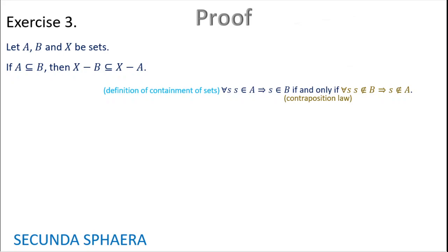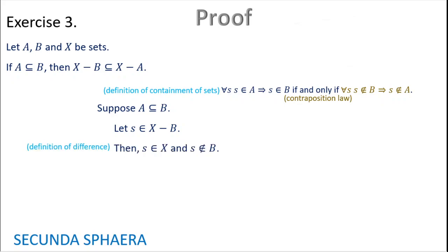We have that A is contained in B — that's our supposition. So right now we want to prove the containment that X without B is contained in X without A. Our magic phrase for proving containments: let s be in X without B. Then, just by the definition of difference of sets, s is in X and s is not in B.